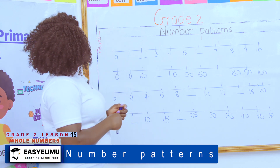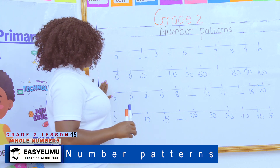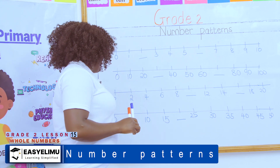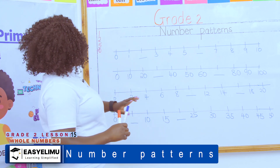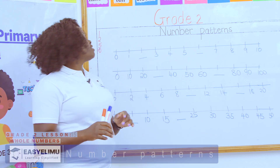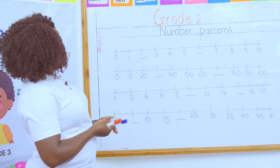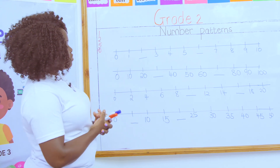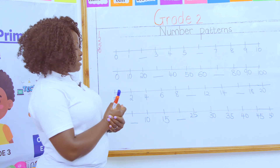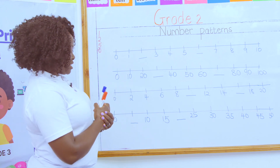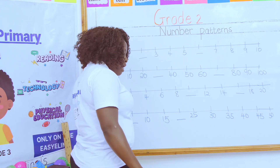Today we want to form patterns using a number line. When you look at zero like that, our patterns mean you are counting forward. Do you remember the game we were playing in the field where you are skipping, depending on the pattern?